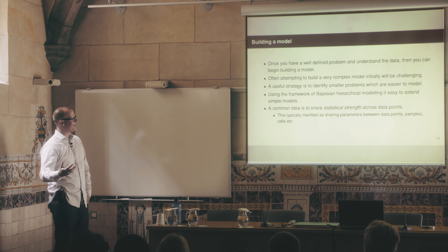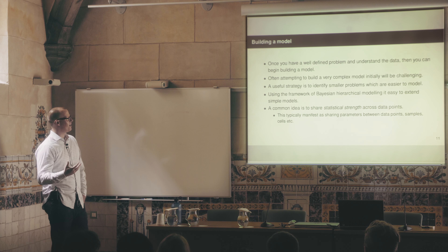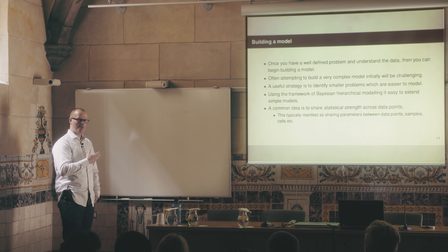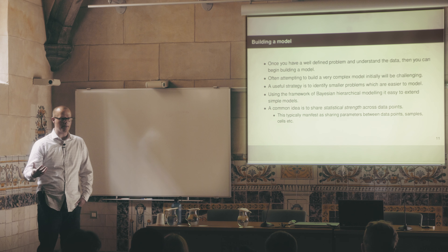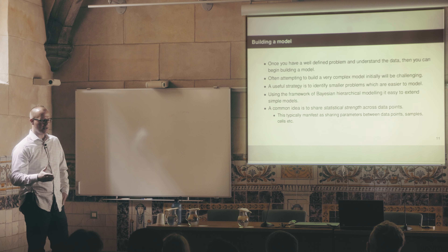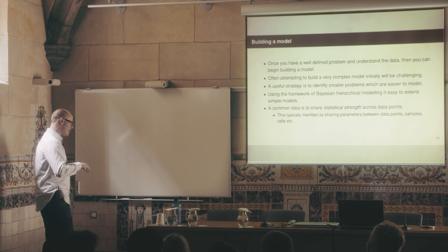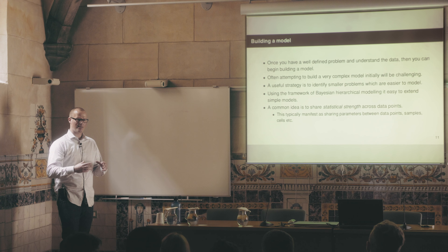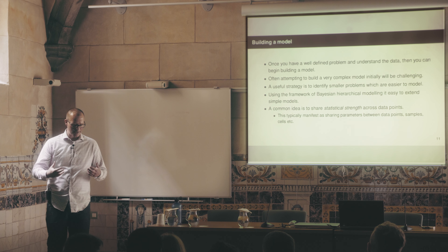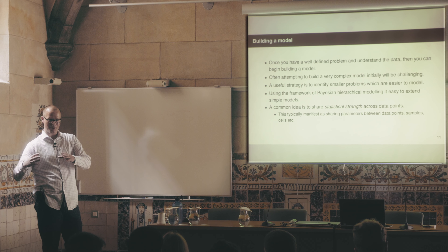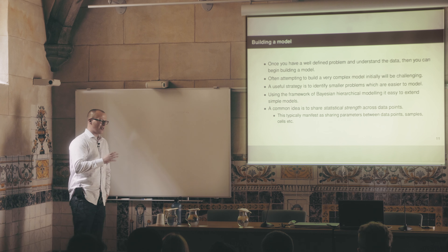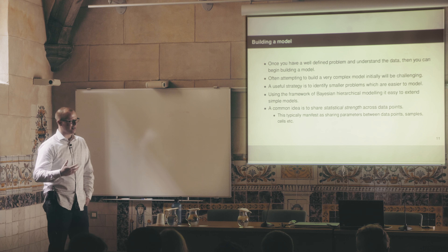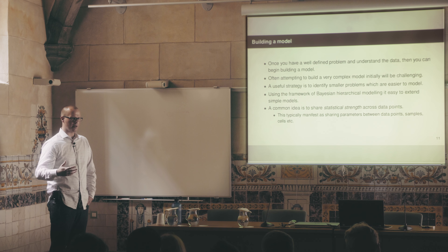You've got a problem, you know what your data looks like — now you want to build a model. The first time you do this, your natural reaction might be to build the most complex thing you can imagine, trying to model every facet of the data. That almost never works. You'll always need to simplify models to get to something tractable. It may even make sense to start with an even smaller sub-problem. In the framework of Bayesian hierarchical modeling, once you've done that, it's very easy to take what you've built and plug it into something more complex. That plugging-in is motivated by the idea of sharing statistical strength — introducing some form of shared parameter among the data points.